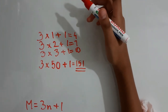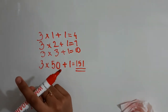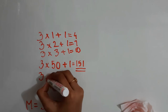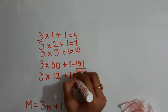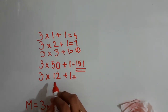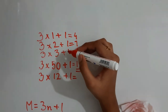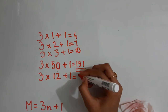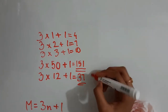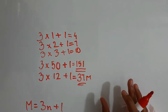Let's take another example. Find the matchsticks for the 12th figure. Always write the formula first: 3 × 12 + 1 = 36 + 1 = 37. So there are 37 matchsticks in the 12th figure.